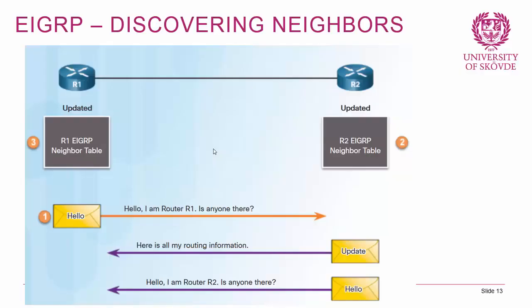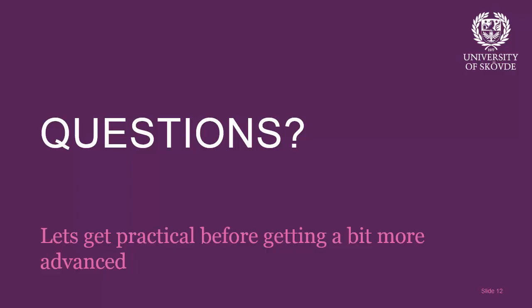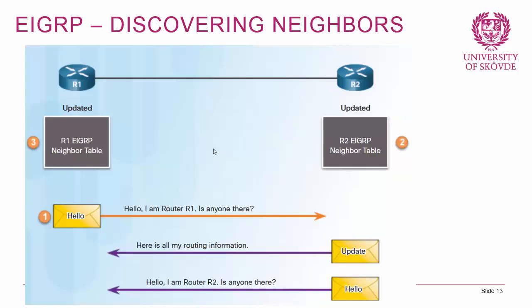Now let's look more deeply into the DUAL algorithm. When a router boots with EIGRP, it sends out a hello packet: 'Hello, I'm router one, is anyone there?' If there is an EIGRP router on the other side, it responds with an update containing all its routing information, followed by its own hello. At this point an adjacency is formed.